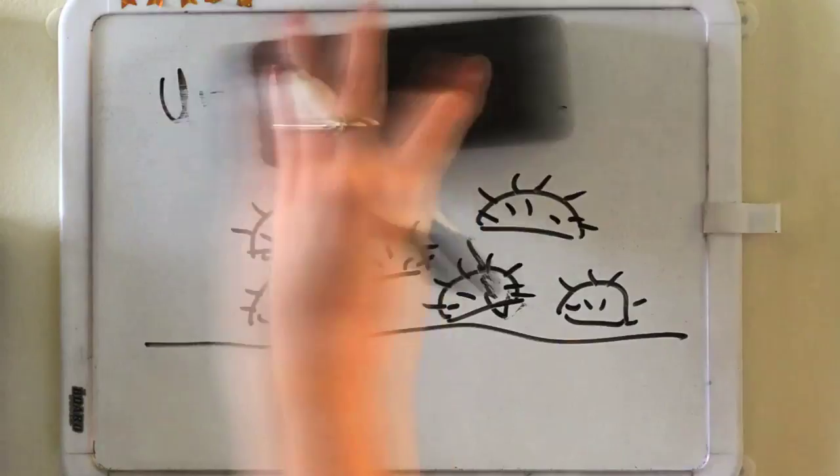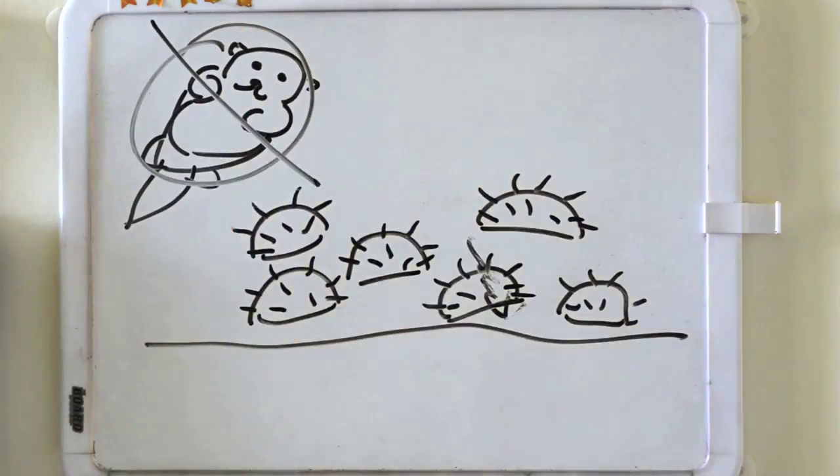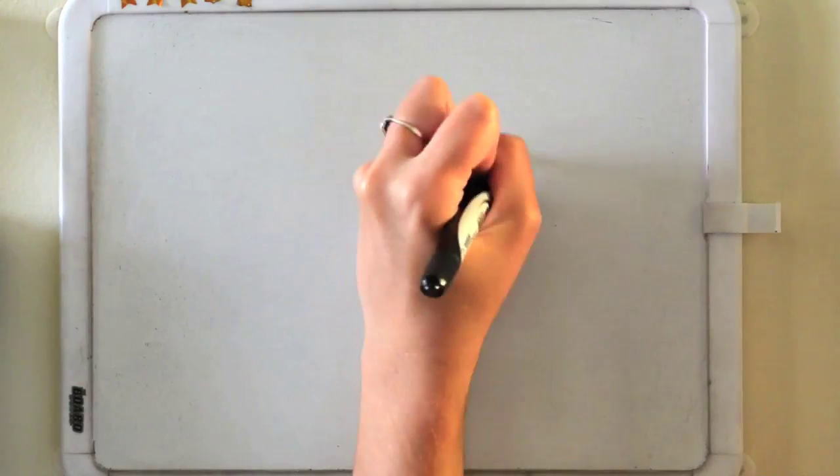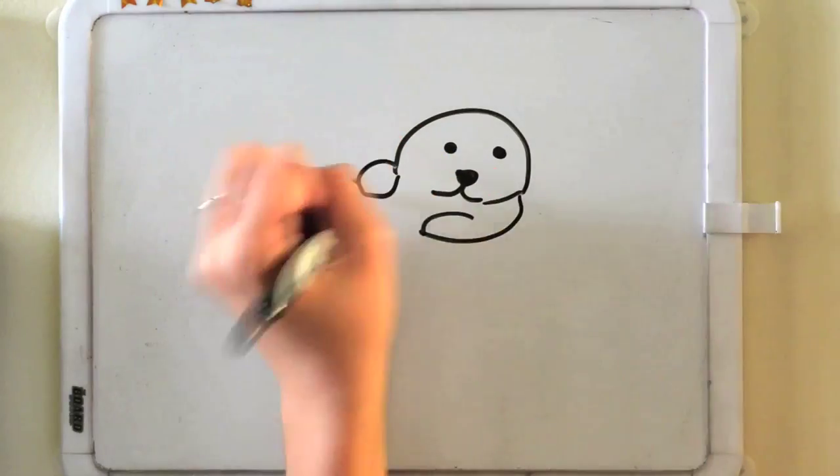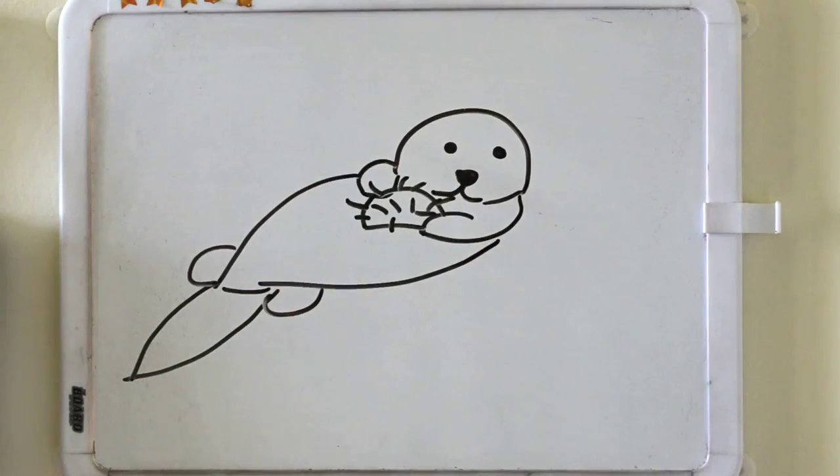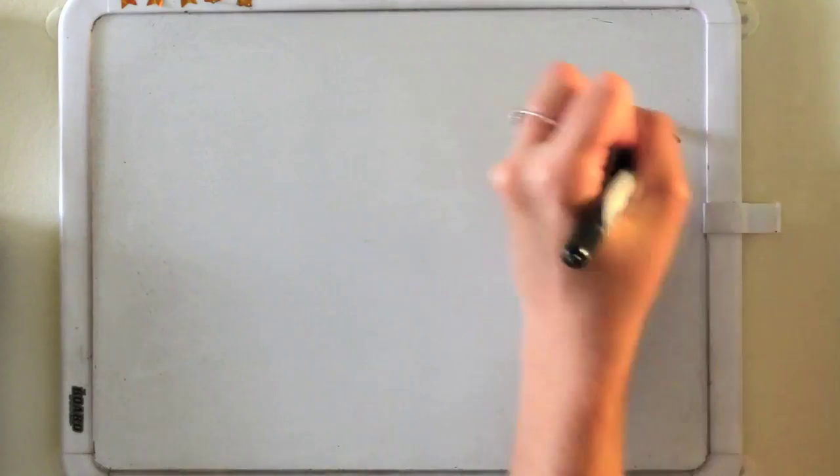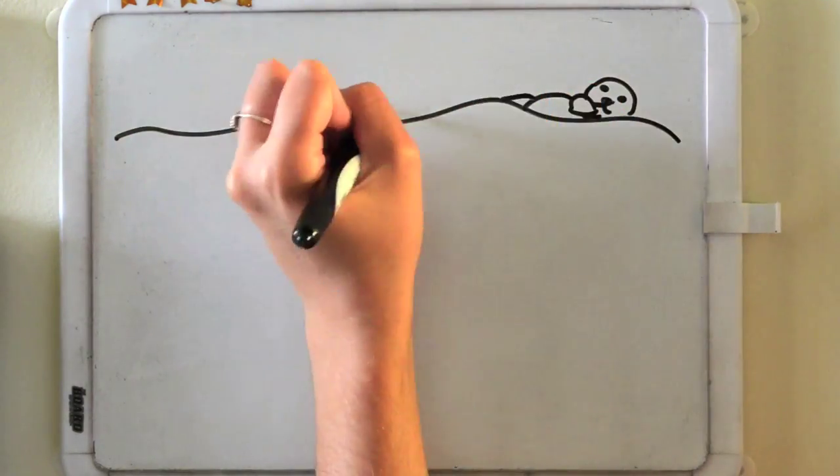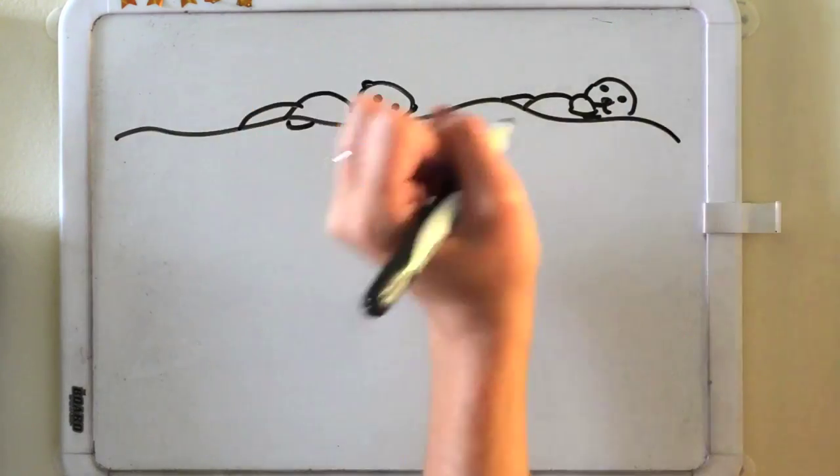In addition to this, scientists observe that sea urchins are common only where sea otters are absent. So what does this mean? Well, the otter's favorite food happens to be the sea urchin. For this reason, places where otters have been present for a long time have many kelp and few sea urchins.